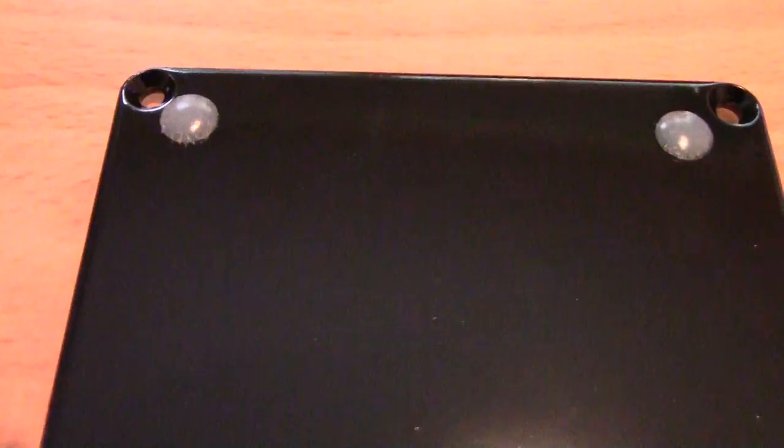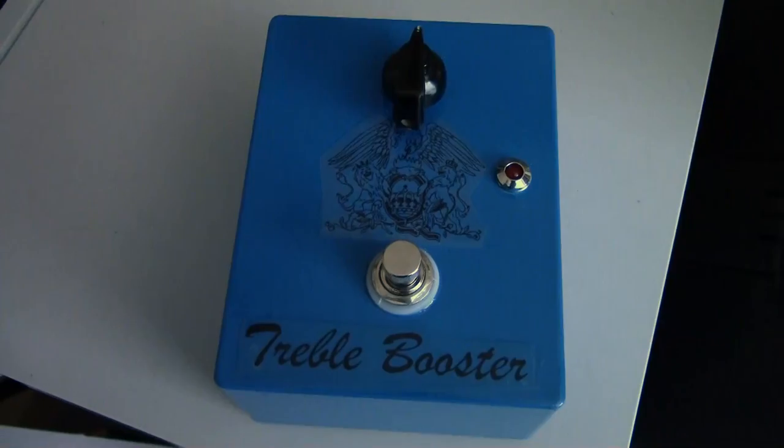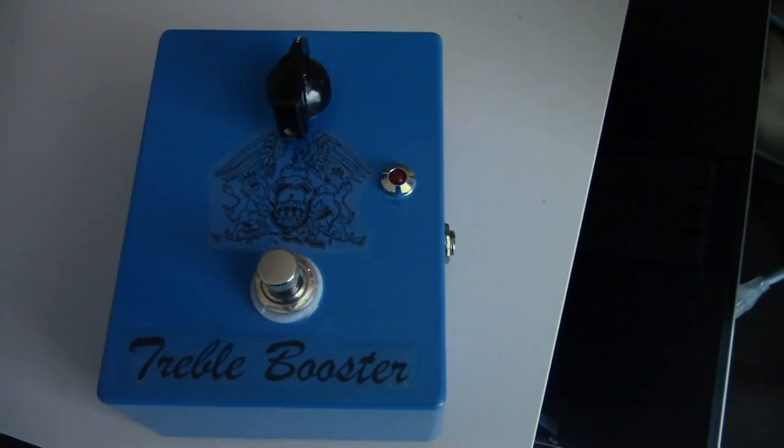Finally, attach the adhesive feet to the bottom of the enclosure and you are done. There you have it. A completed treble booster by Muzikding.